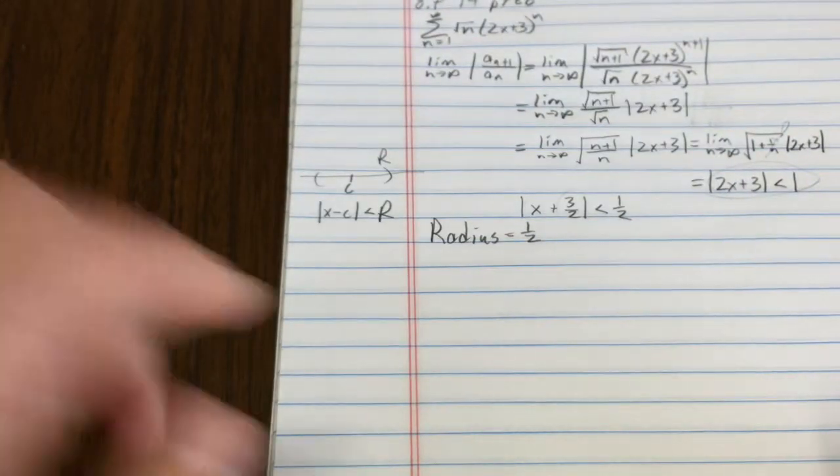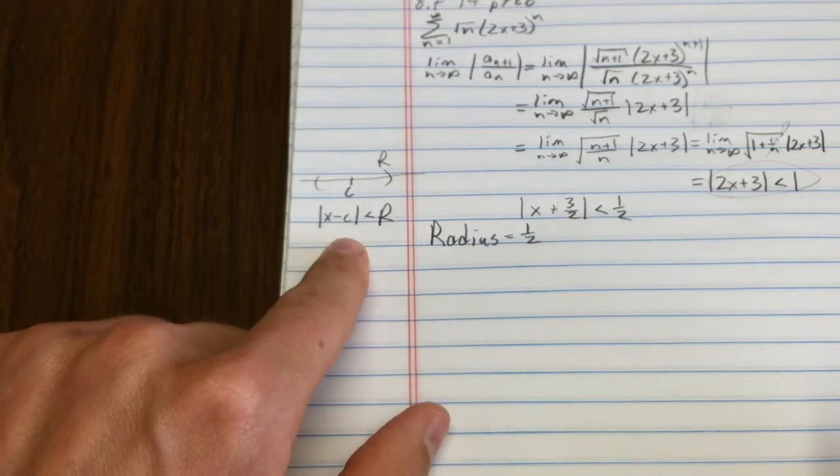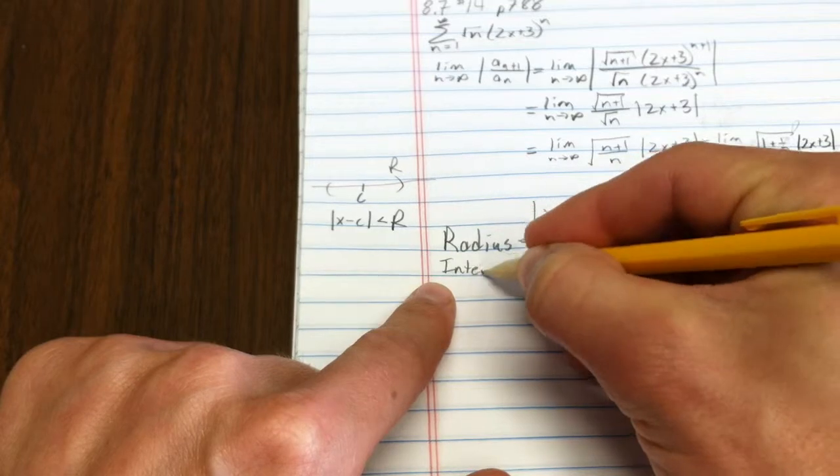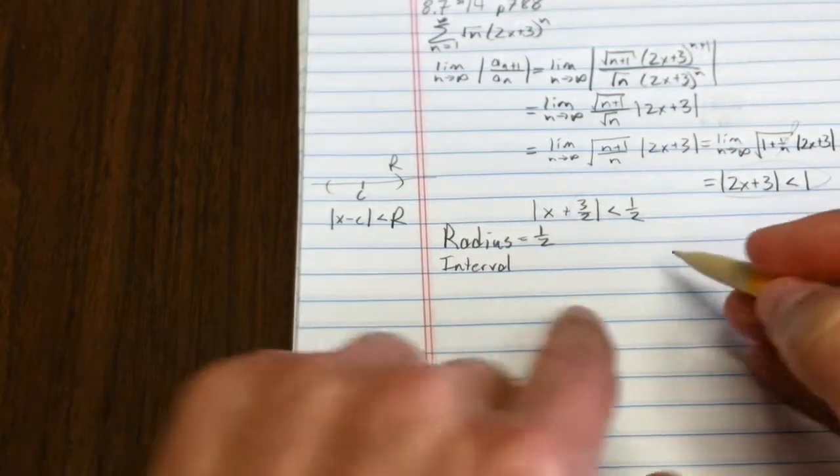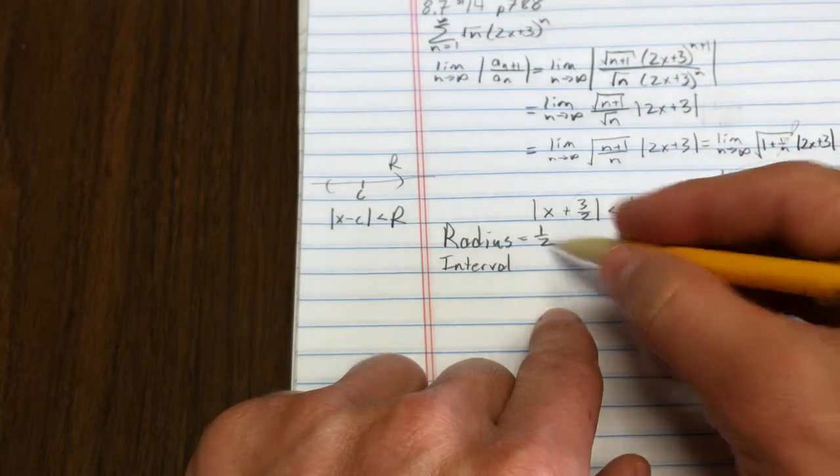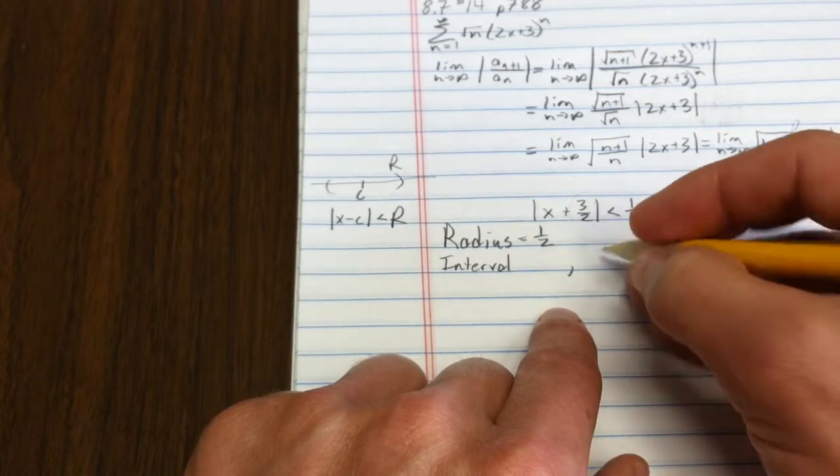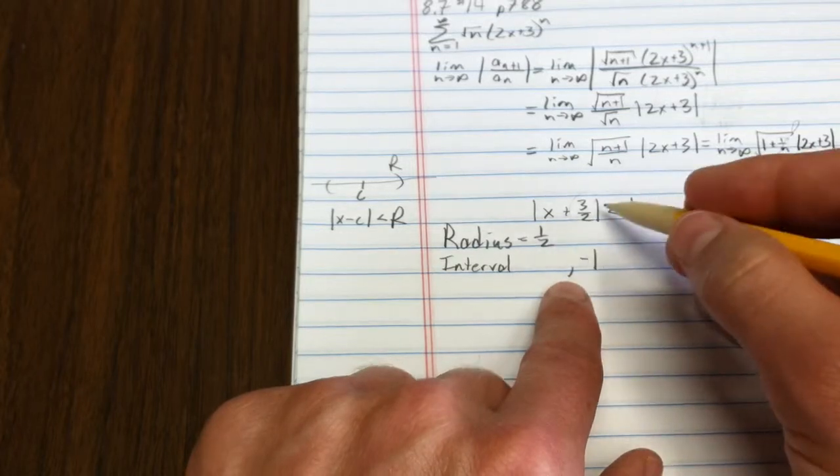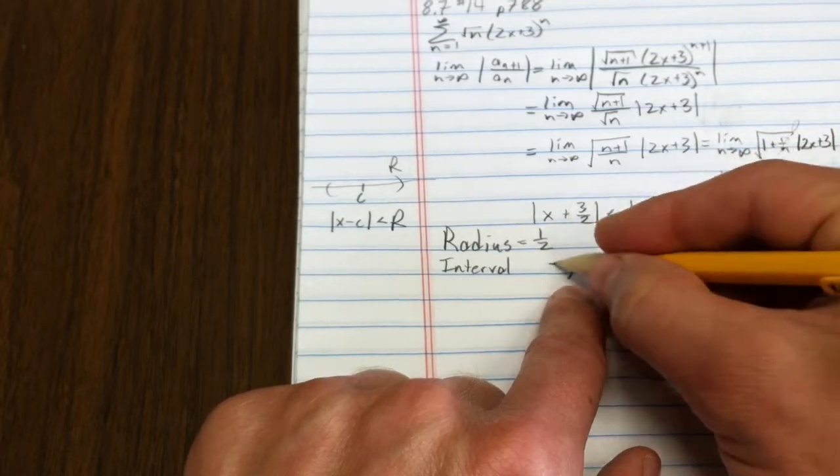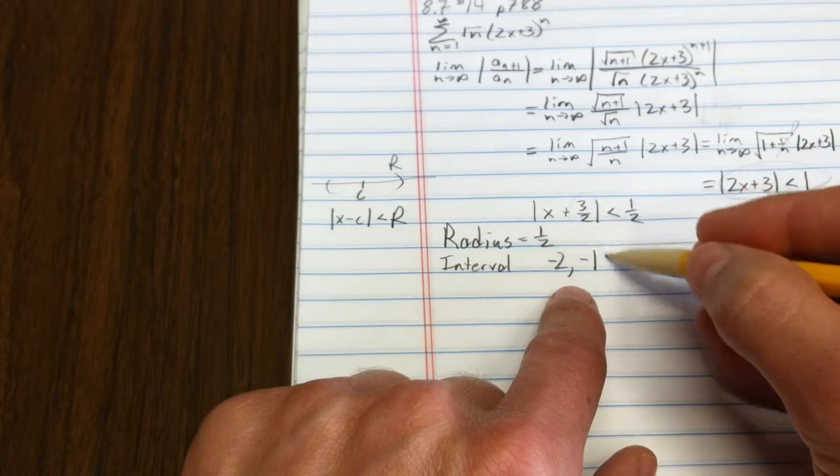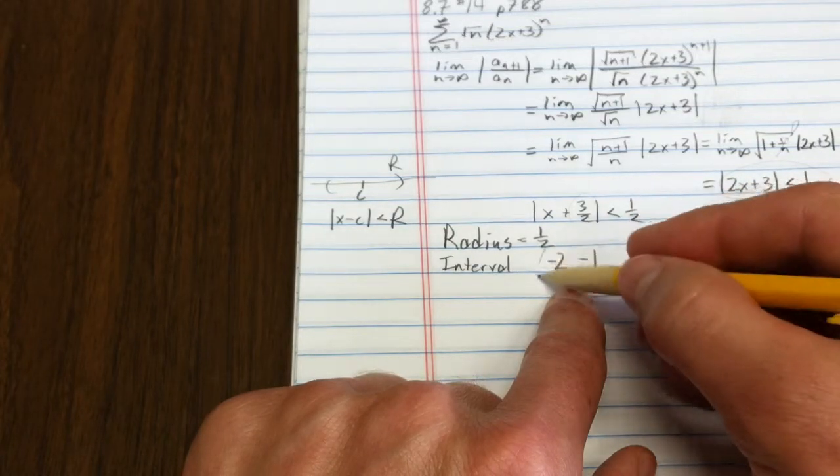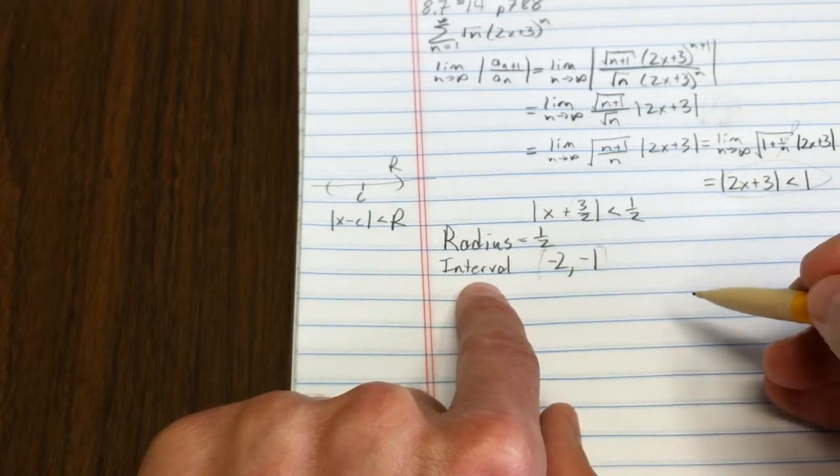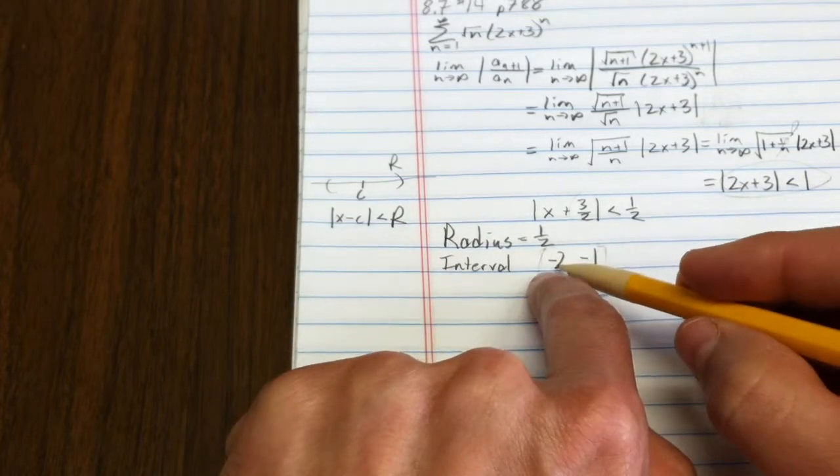Okay, so now I know most of the answer to the second question, but the problem is the end point. So the interval is going to be centered at negative 3 halves. I'm going to add a half to negative 3 halves and get negative 1. Subtract a half from negative 3 halves and get negative 2. The problem is, I don't know whether these are included, these end points are included or excluded. So really, when you're trying to find the interval of convergence, you want to look at that end point.